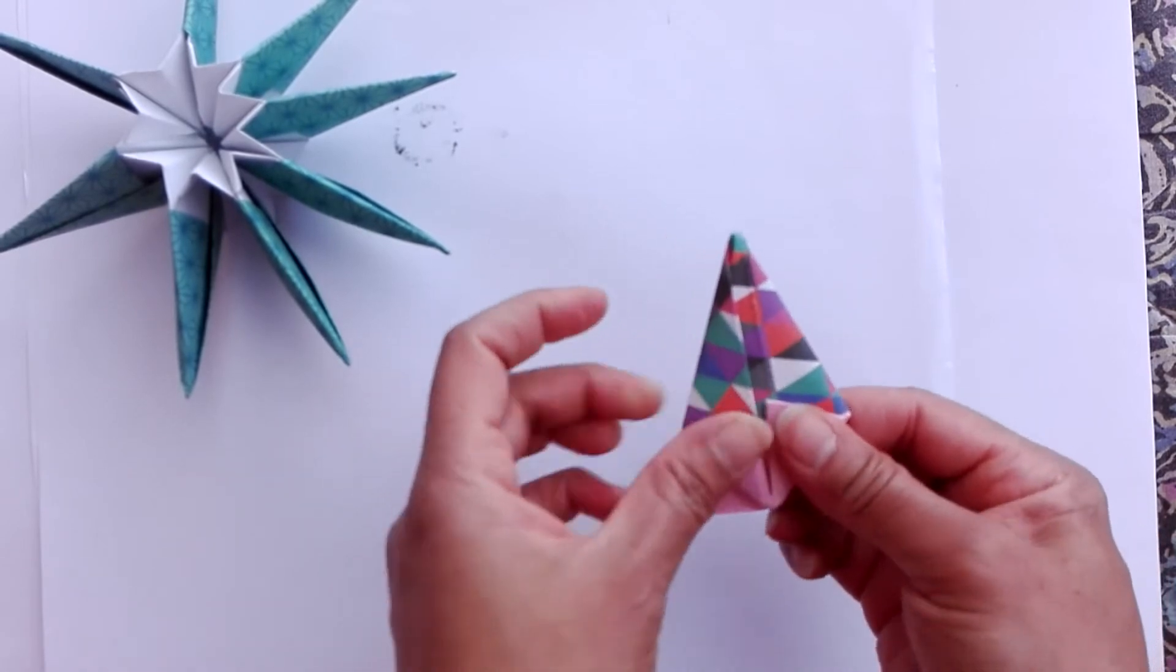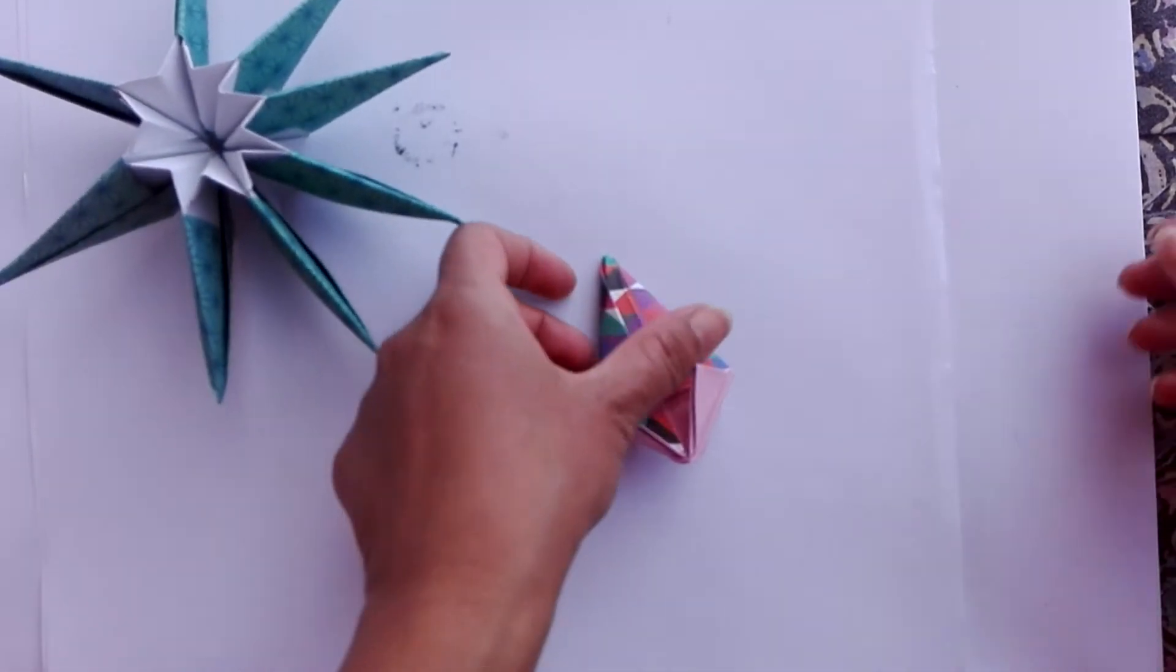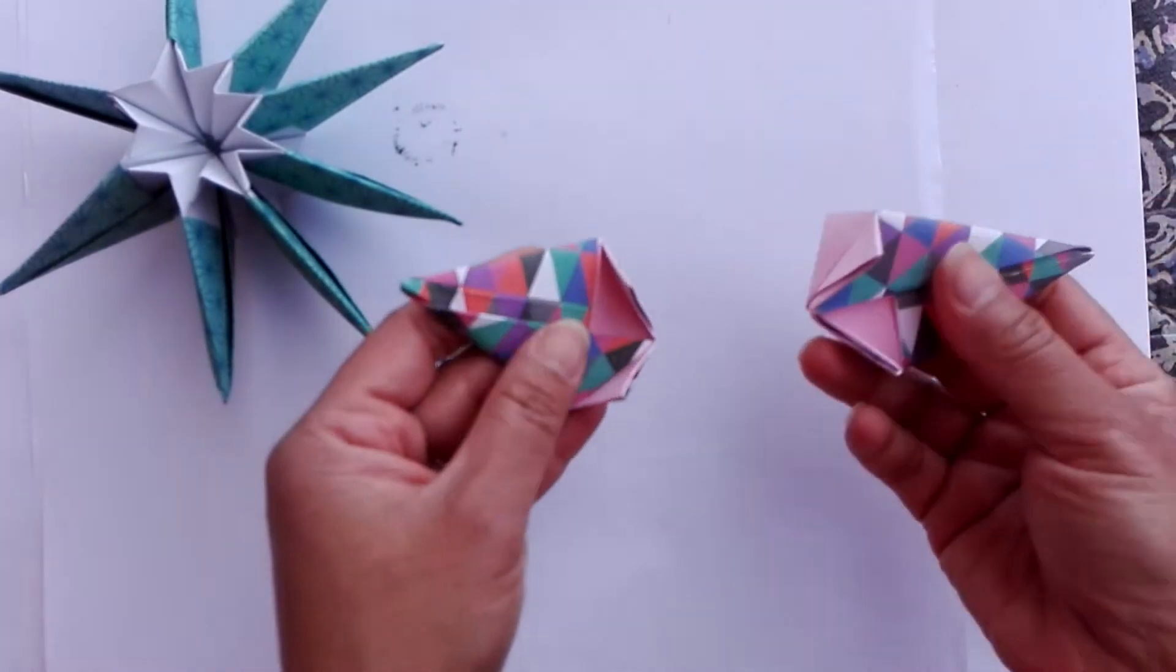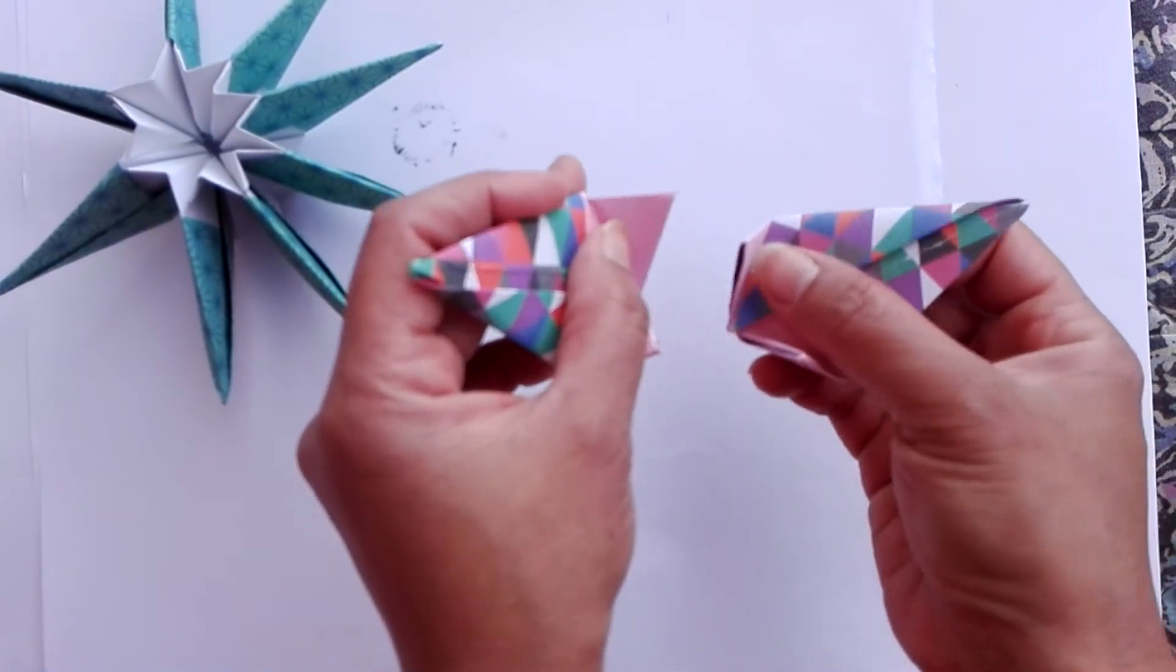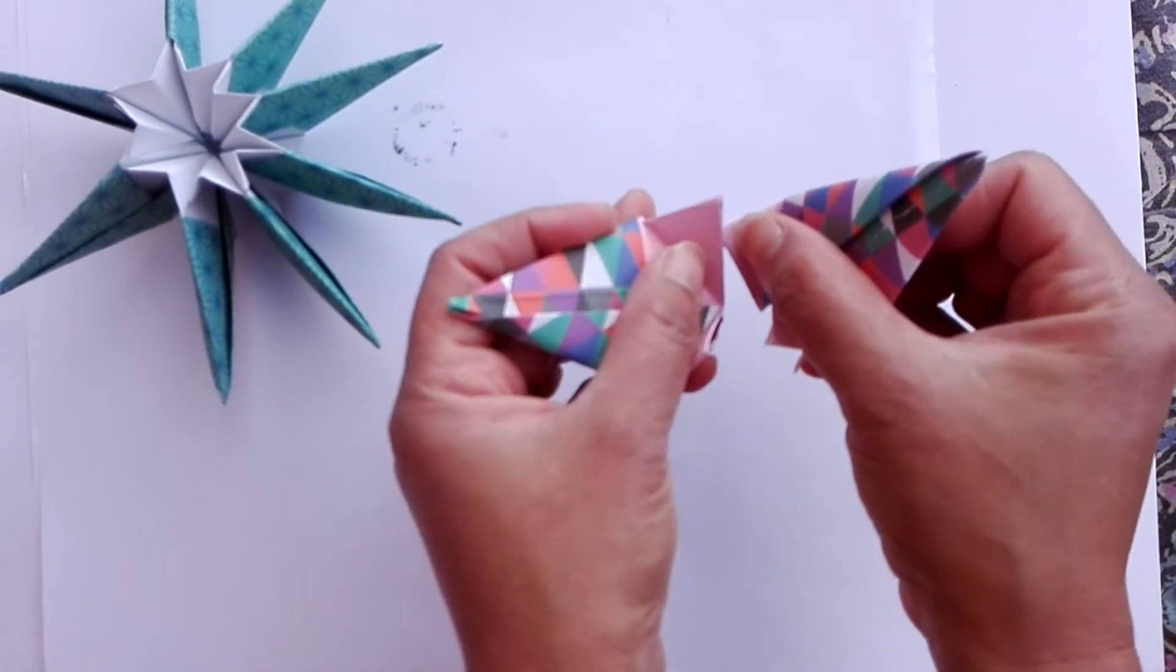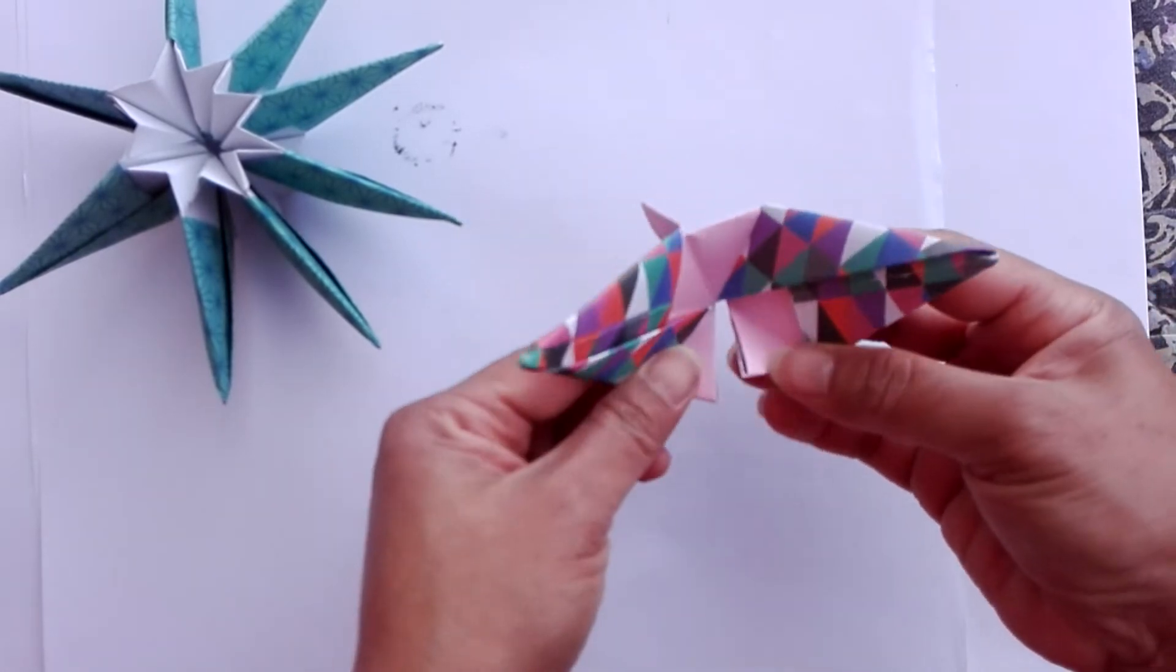That's it, we've finished our first model. We want to make eight of these. As you see, we connect them in this way: I put this triangle inside this one in this way, and the other one.